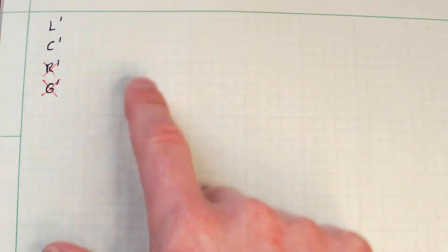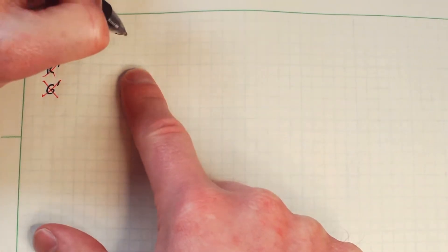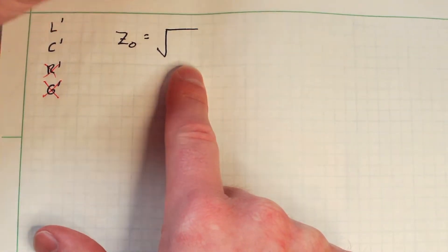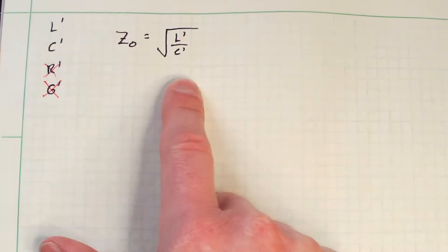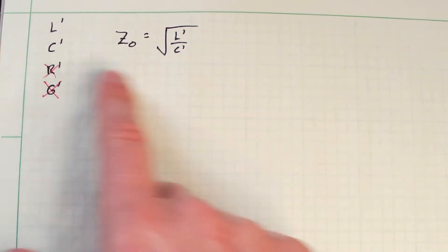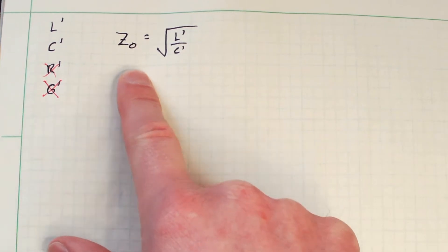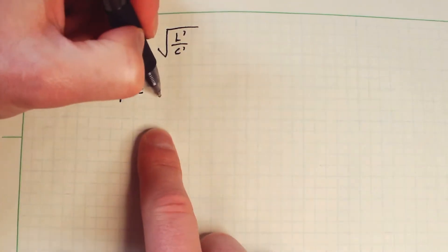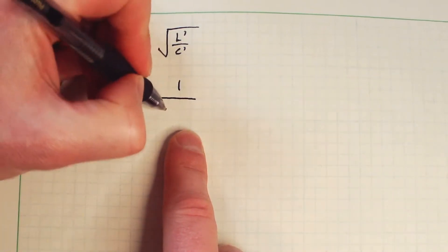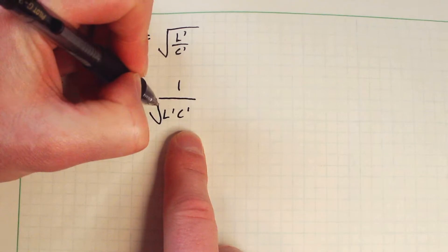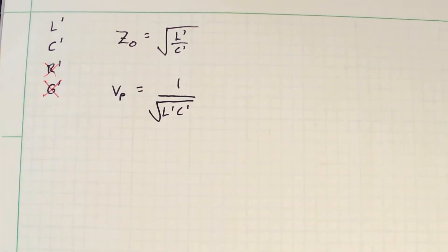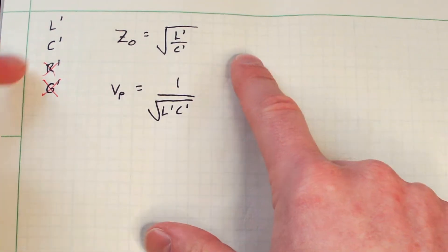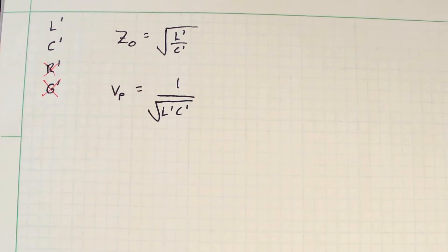So once I have L' and C', I can, in principle, calculate Z0 which is equal to the square root of L' divided by C'. So if I know L' and C', I can presumably calculate the characteristic impedance. Likewise, we have the phase velocity Vp, which is equal to 1 divided by the square root of L' times C'. So if I know these two parameters, I also can derive these two over here. And again, this assumes that these two parameters are small to the point of being negligible.